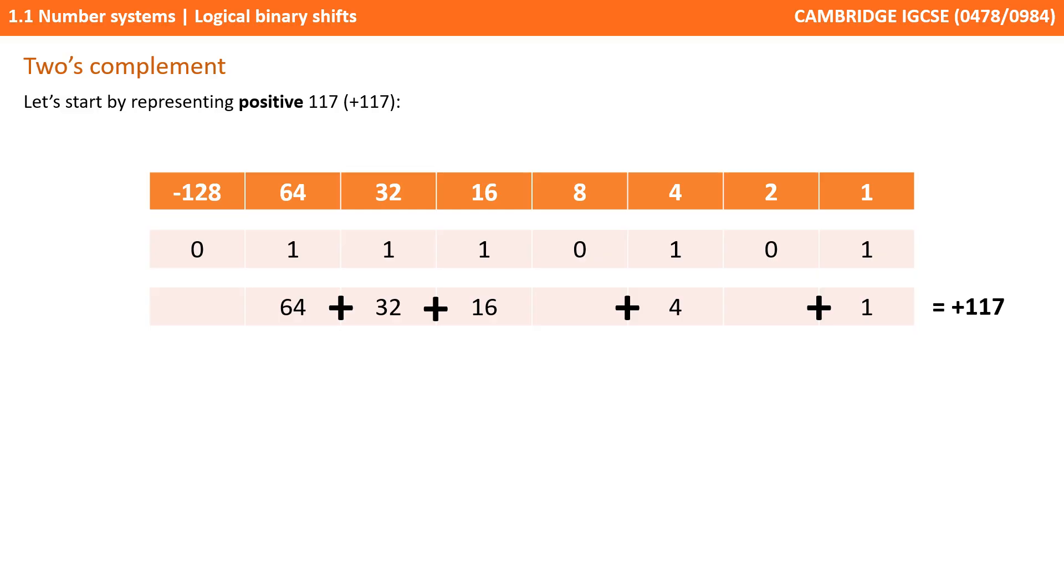And then, like we've shown you in the previous video, we pop 1's in every column we need to add the values to 117. So we have a 1 in the 64 column, plus a 32, plus a 16, plus a 4, plus a 1, and we have a positive 117.